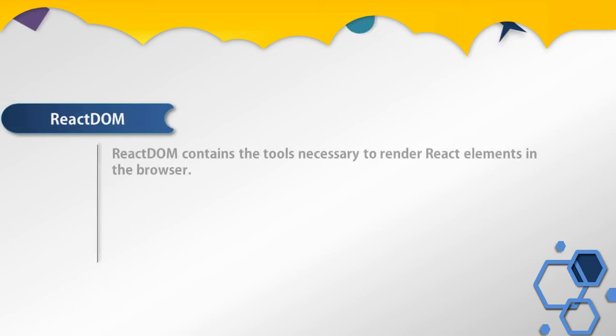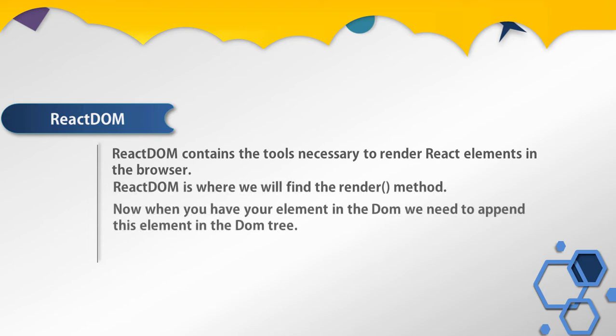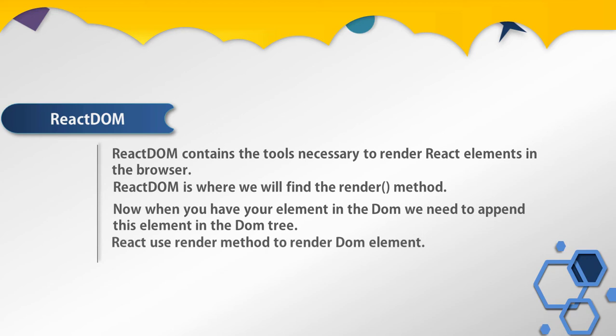So a React element is just a JavaScript literal that tells React how to construct the DOM element. Now let's talk about ReactDOM. ReactDOM contains the tools necessary to render React elements in the browser. ReactDOM is where we will find the render method. When you have your element ready, you need to append it into the DOM tree, and React uses the render method to do that.